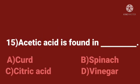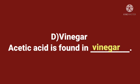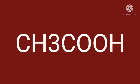Fifteenth question. Acetic acid is found in dash. A. Curd. B. Spinach. C. Citrus fruits. D. Vinegar. Time starts now. Answer is vinegar. Acetic acid is found in vinegar. The formula of acetic acid is CH3COOH.